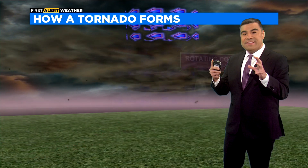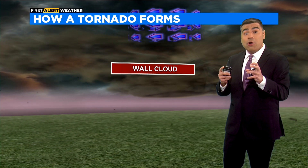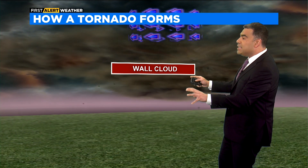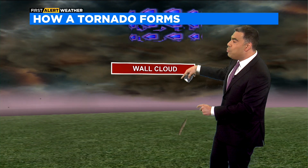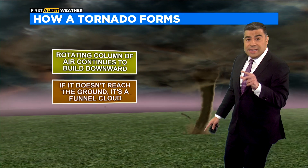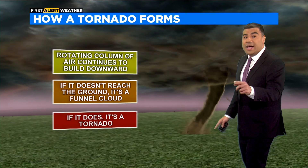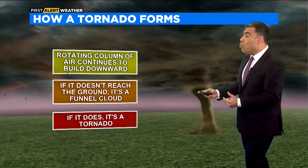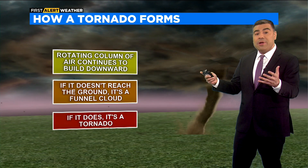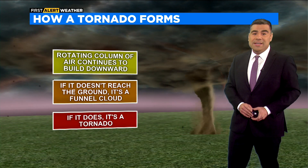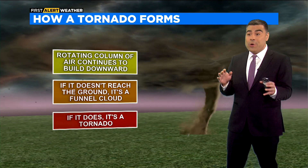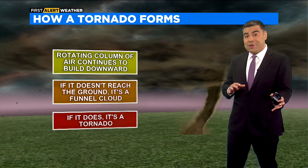Once that happens and the rotation gets strong enough, a wall cloud develops — that is a lowering in the cloud base within a rotating thunderstorm. The next step is a funnel cloud. It's only a funnel cloud if it's still above the ground, but once it touches down and picks up debris, that's when it's considered a tornado.